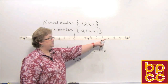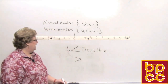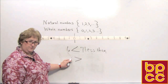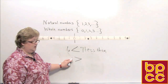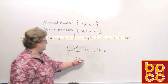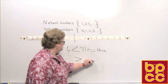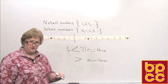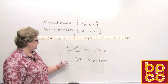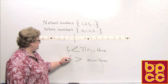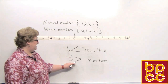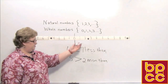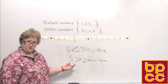You can see on the number line that six is less than seven. For the greater than symbol, the mouth is open as you read left to right, so we say 'more than' or 'greater than.' Let's make a statement: five is greater than two, and you can see on the number line that five is greater than two.